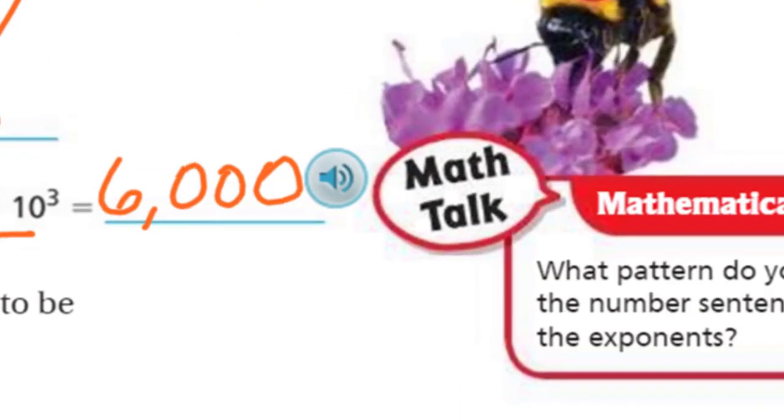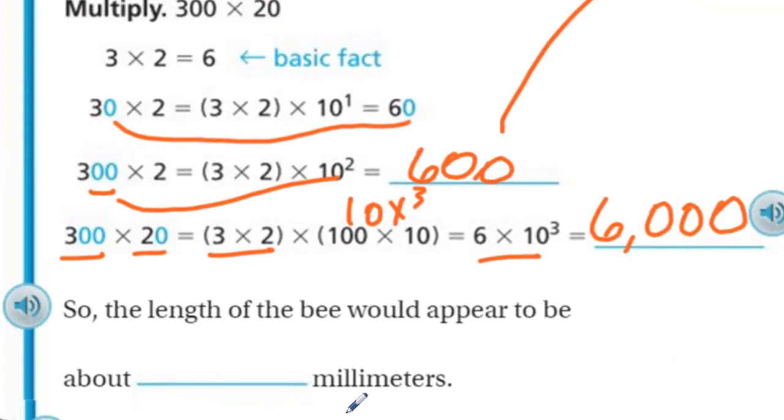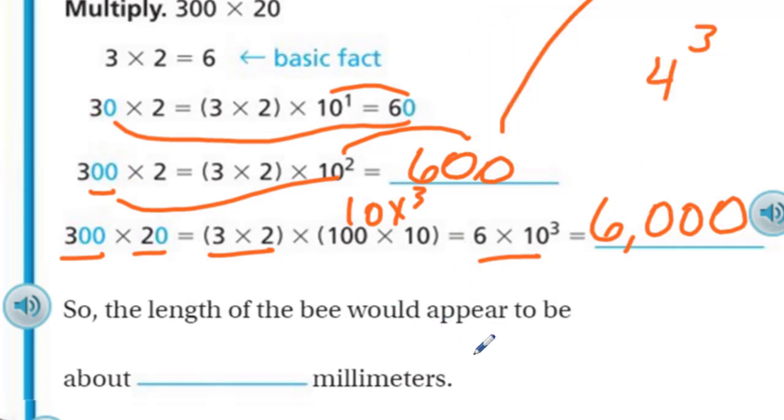Now we have 300 times 20. The 300 didn't change. We still have our basic fact. We have 3 zeros, so we have 100 times 10. That's just 10 raised to the third power, which we have over here, and there's our 6. 6,000. The pattern shows that if you can multiply that basic fact, the only thing changing is the exponents letting you know how many zeros there are. So the length of the bee would appear to be about 6,000 millimeters.